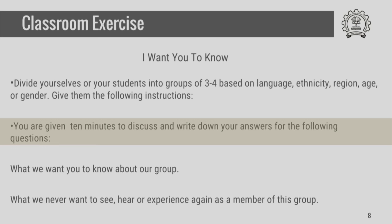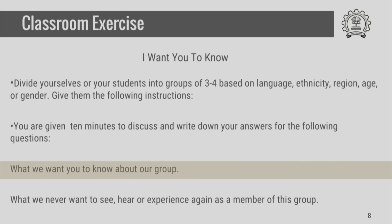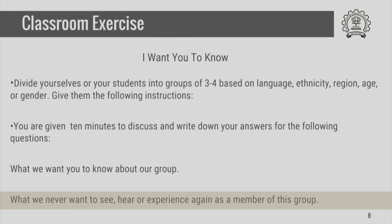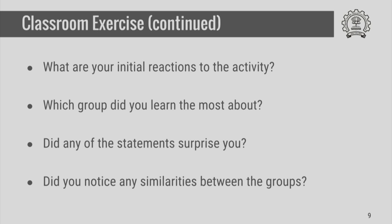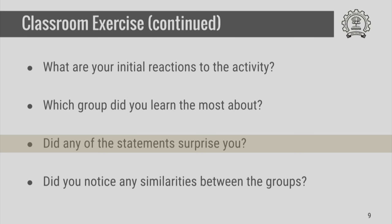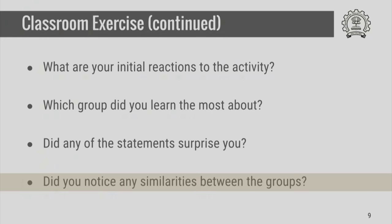Give the group 10 minutes to write down and discuss answers to the following questions: What do we want you to know about our group? And secondly, what do we never want to see, hear or experience again as a member of this group? Many of you will be surprised at the kind of responses you get, because in general we believe that either we ourselves are not biased or discriminatory, or that these issues are issues of the past and do not affect learning processes in the present. Once you do this exercise, you can think of your initial reactions, reflect on which group you learnt about the most, something that surprised you or that you did not expect, and also whether there were any similarities between the different kinds of groups. This is an initial sensitizing activity which helps us to enhance our communication.